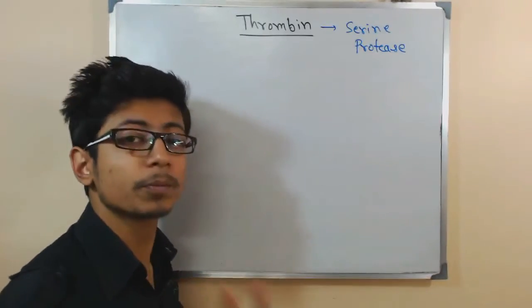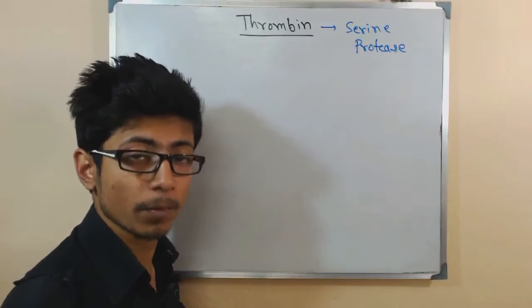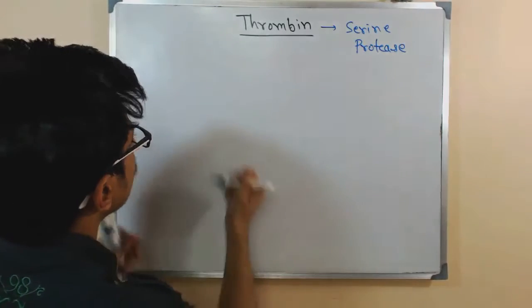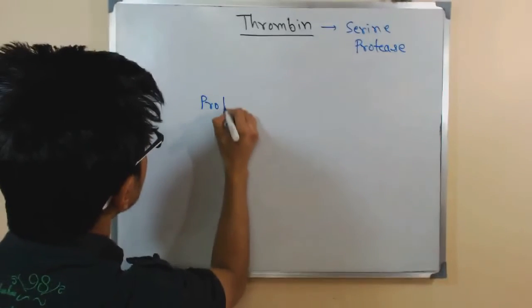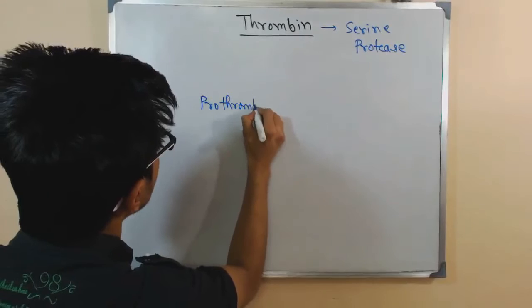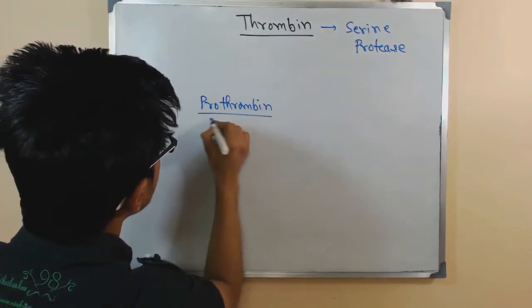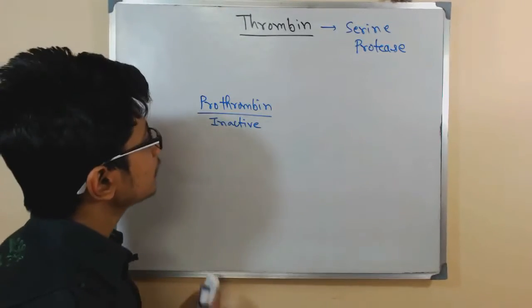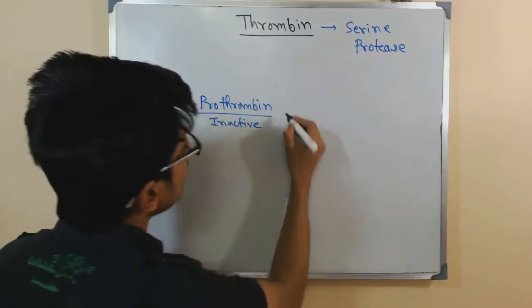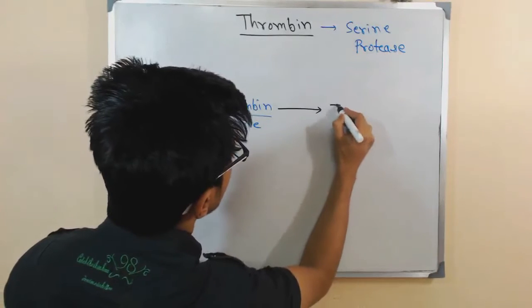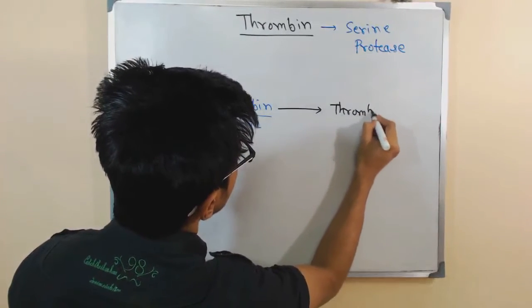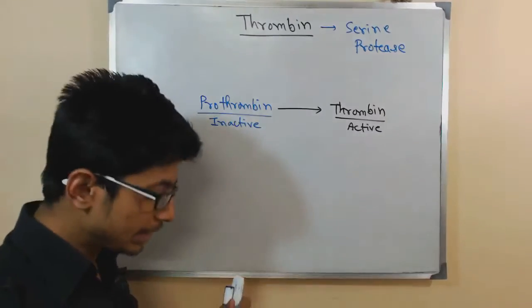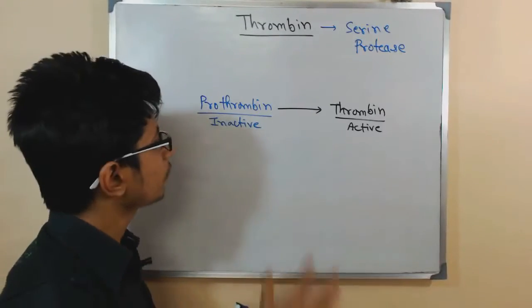Thrombin itself starts in an inactivated form called prothrombin — that is the precursor form of thrombin. Prothrombin is the inactive form, and it becomes activated to thrombin, which is the active form. So thrombin itself needs to be converted from the inactive to the active state.